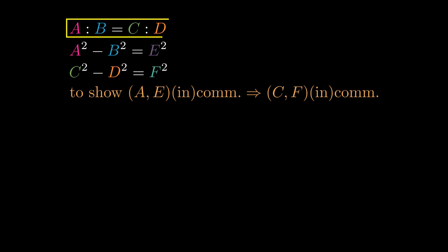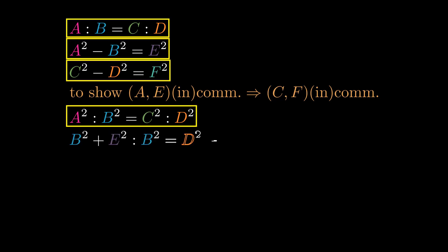Due to our given proportion A-squared to B-squared being proportional to C-squared to D-squared, A-squared equaling B-squared plus E-squared and C-squared equaling D-squared plus F-squared means B-squared plus E-squared to B-squared is proportional to D-squared plus F-squared to D-squared.